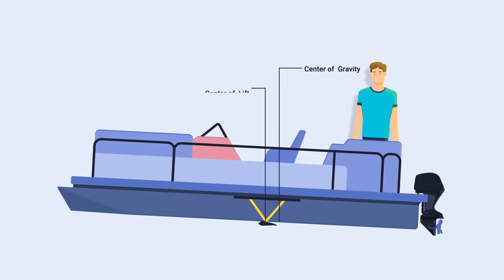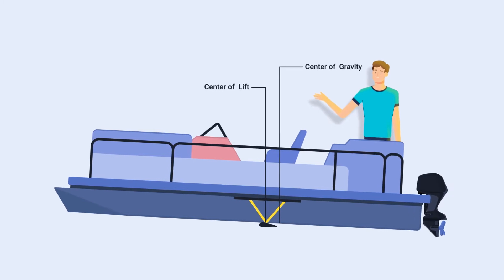And if the center of lift is forward of the CG, the same couple is formed and the bow rides trimmed up.